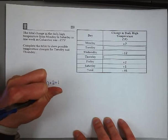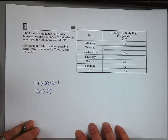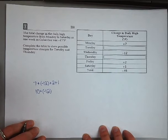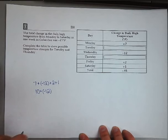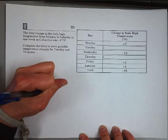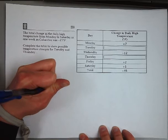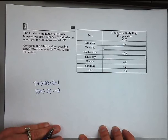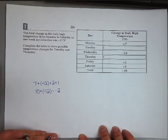On your own, try to total up ten and negative twelve. Remember that with different signs you subtract and keep the sign of the larger number. We find that ten plus negative twelve gives us negative two. So the total from all days besides Tuesday and Thursday is negative two.